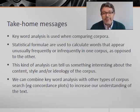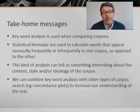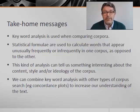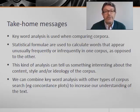To sum up, keyword analysis is used when comparing corpora. Statistical formulae like log likelihood or chi-square are used to calculate words that appear unusually frequently or infrequently in one corpus as opposed to another. This kind of analysis can tell us something interesting about the content, style, and ideology of the corpus. We can combine keyword analysis with other types of corpus search — for example, concordance or dispersion plots — to increase our understanding of how the text works. Thanks again for watching. Now you can play around with your own specialized and reference corpora.